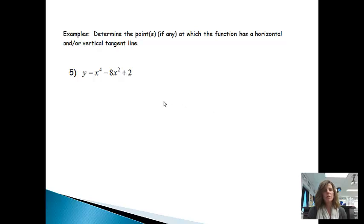This one says to determine the points, if any, at which the function has a horizontal and or vertical tangent line. Well, if I'm talking about tangent lines and I'm talking about slopes, the first thing that we want to deal with is finding the derivative of the function.